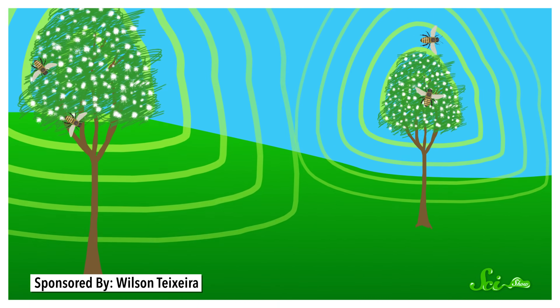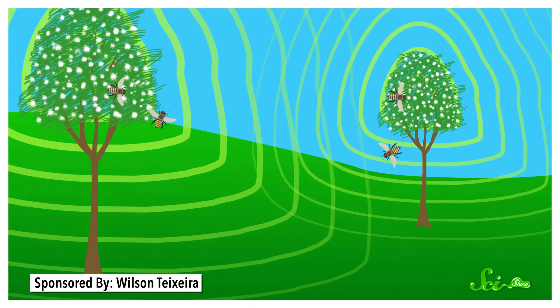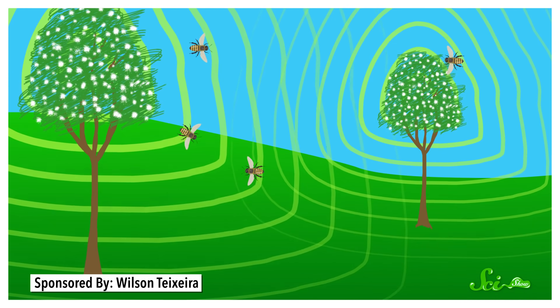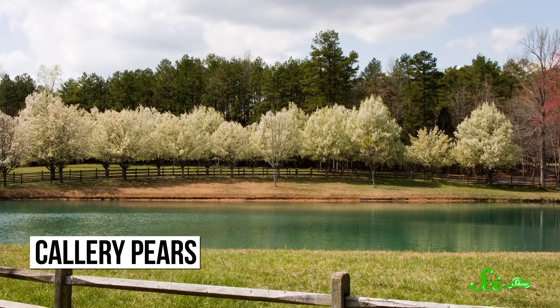It's thought that the strong smell of the flowers is to attract bees that will help spread the pollen to other trees, because the callery pear can only reproduce through cross-pollination. That adaptation is a great evolutionary advantage for the species, but it becomes a problem in urban settings where the trees are planted too close together.